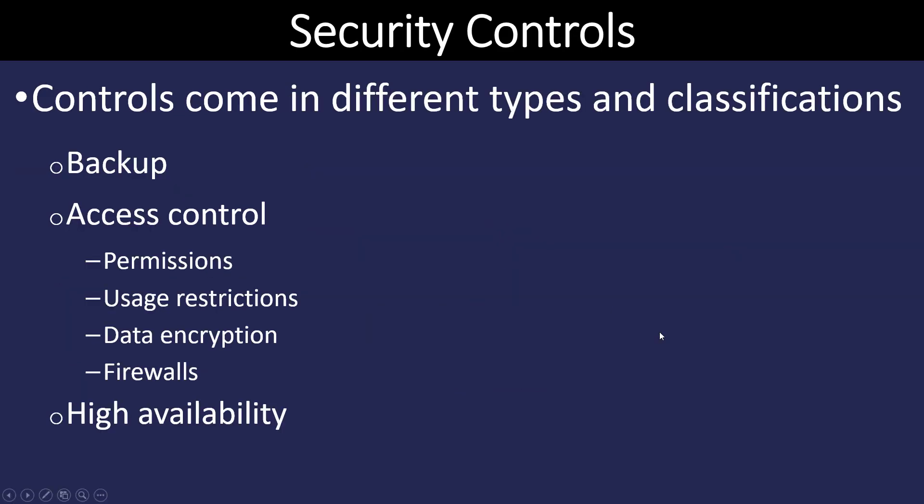What are some of the security controls we can put in place? Many of you have heard of most of these. Back up our data. Make sure that we have a backup. Typically, we'll hear something called a 3-2-1 idea, which is three copies of the data, one off-site and two on-site.